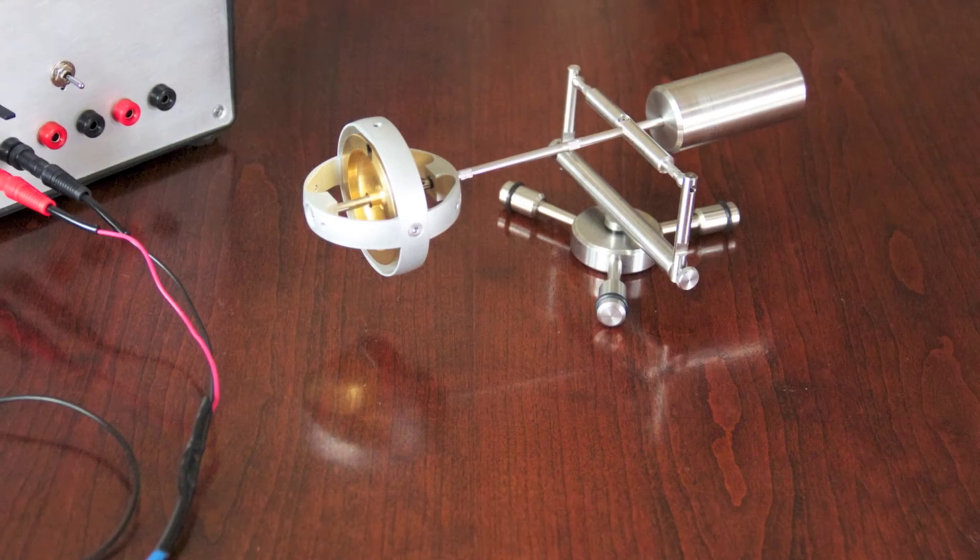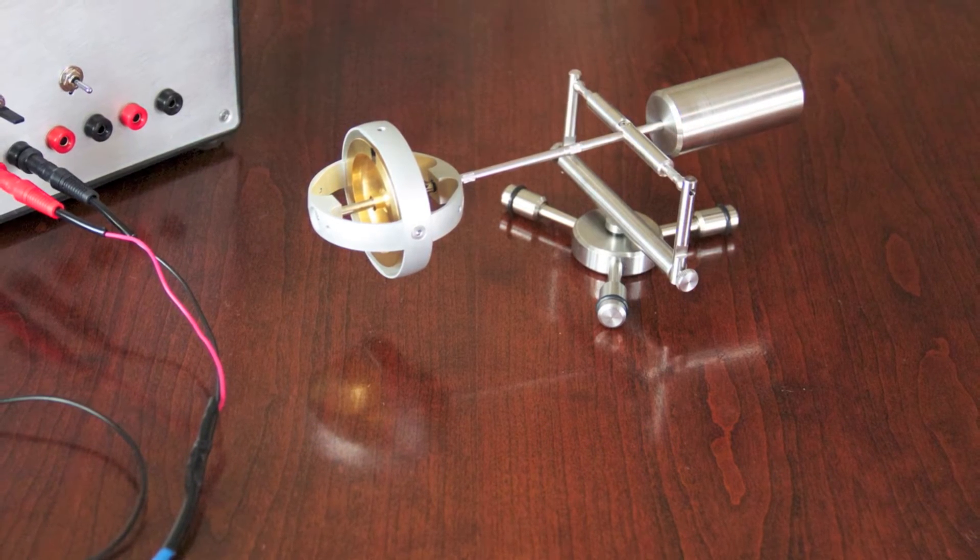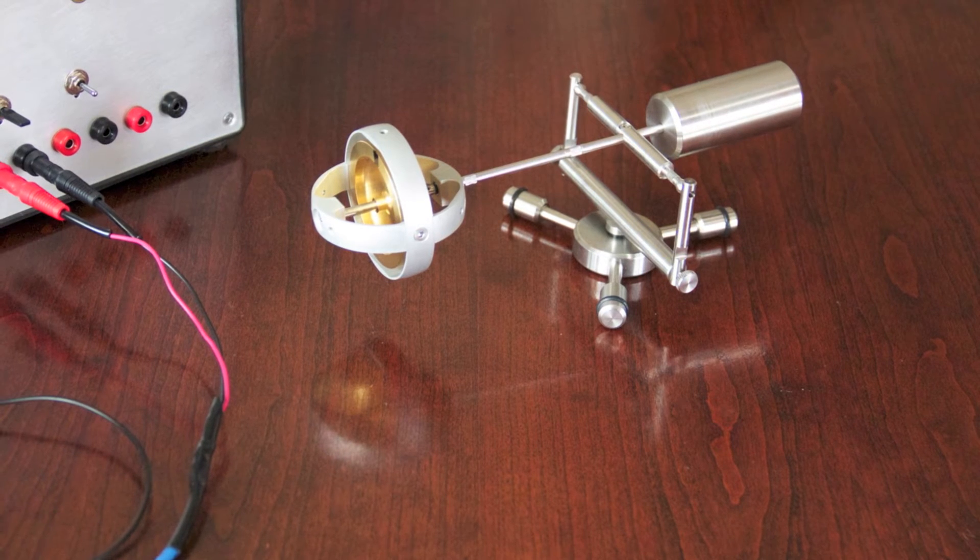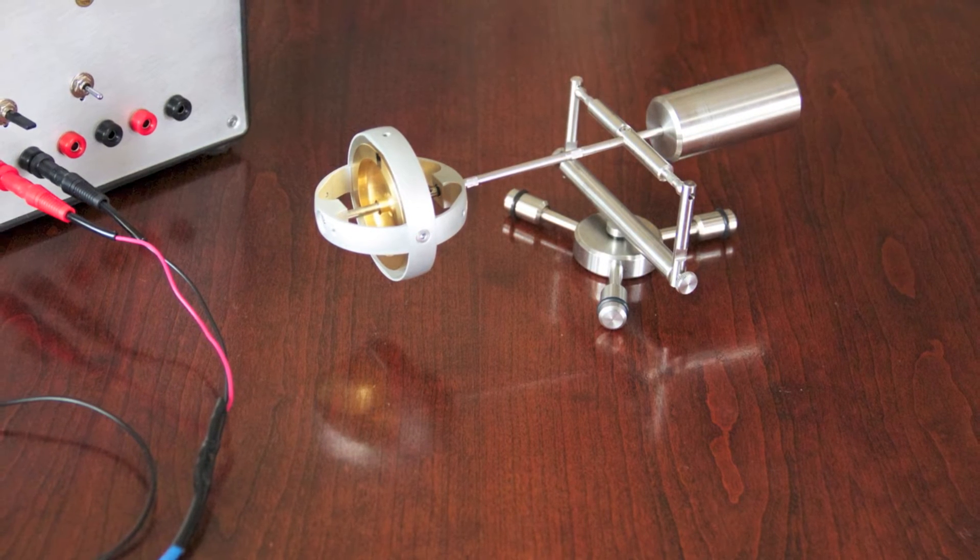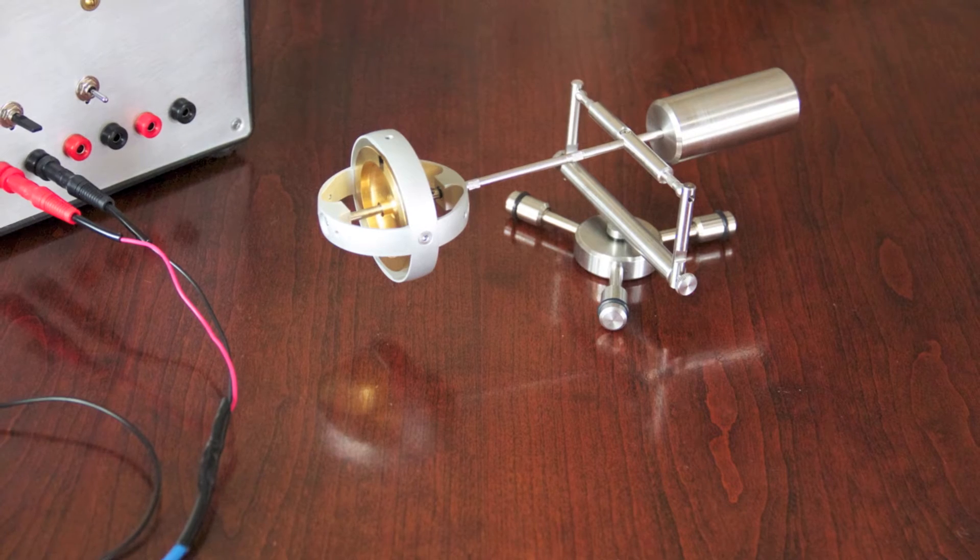If you move the rod of a spinning gyroscope up and down, the gyro will precess clockwise and counterclockwise about its spindle, which is perpendicular to the rod's axis.